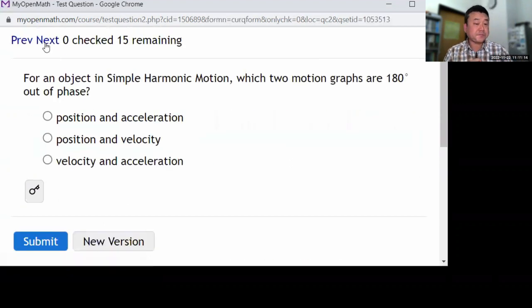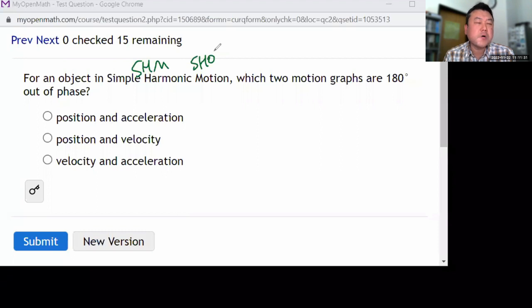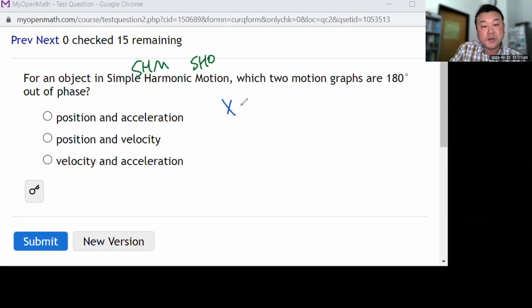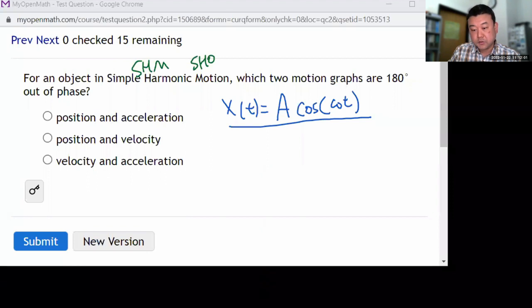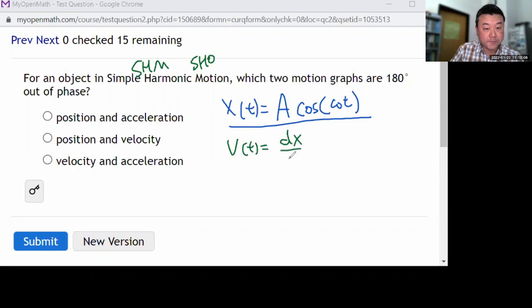For an object in simple harmonic motion, sometimes abbreviated SHM, or SHO for simple harmonic oscillator, which two motion graphs are 180 degrees out of phase? So it's easiest to think of this with some examples in mind. Imagine you have a position of some mass on a spring that's described with the amplitude, some trig function, and we'll make the phase factor equal to zero, so that I can just say it's cosine of omega t.